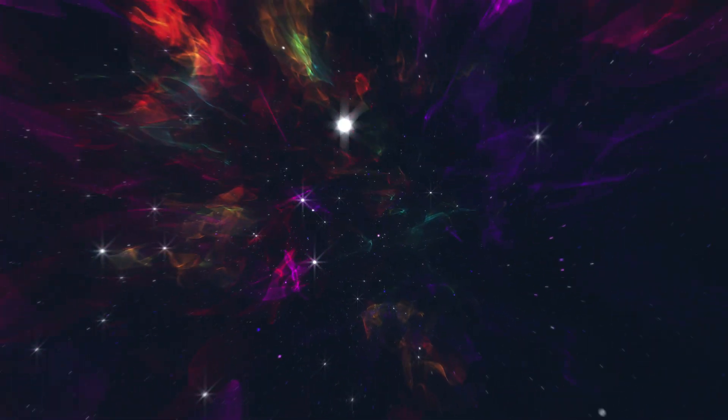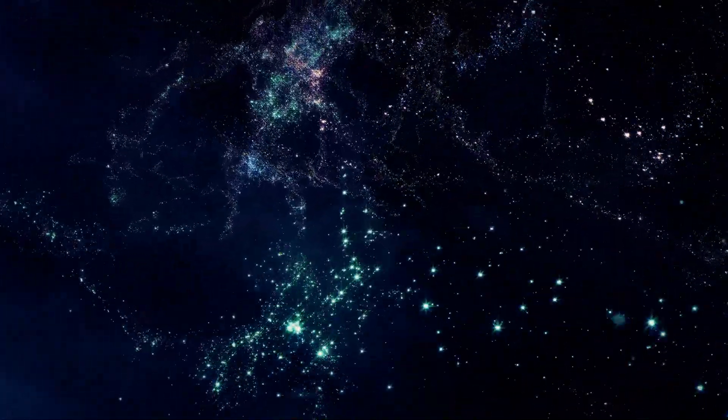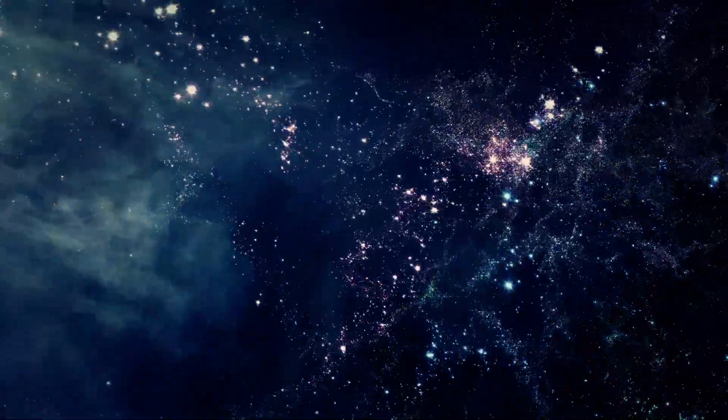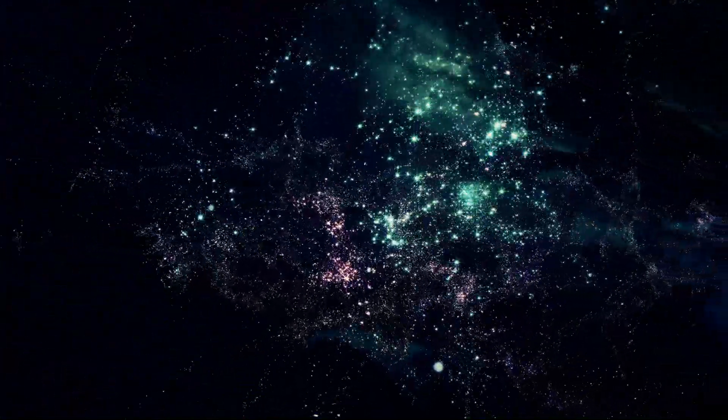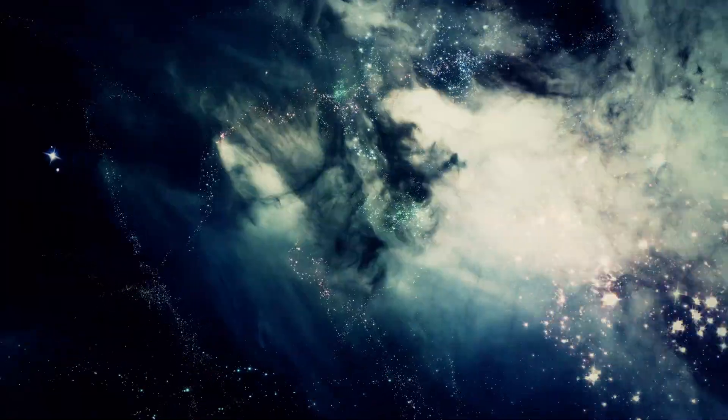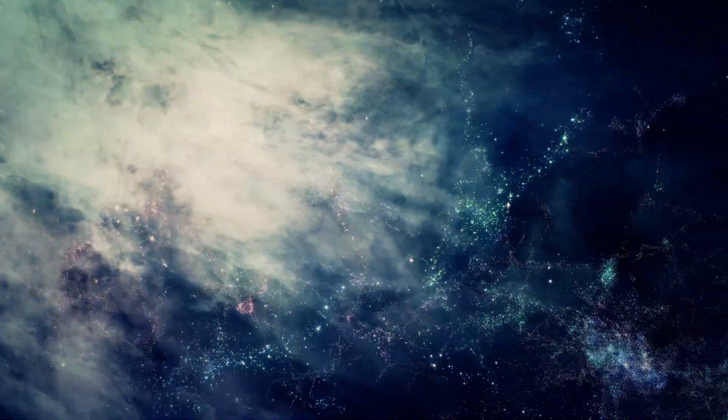The expansion occurs uniformly, meaning there is no specific center or edge to the universe as a whole. Every point in space sees other points moving away. Beyond a certain distance, called the cosmic event horizon, galaxies become permanently unreachable, even if we could travel infinitely fast, due to the accelerating expansion.